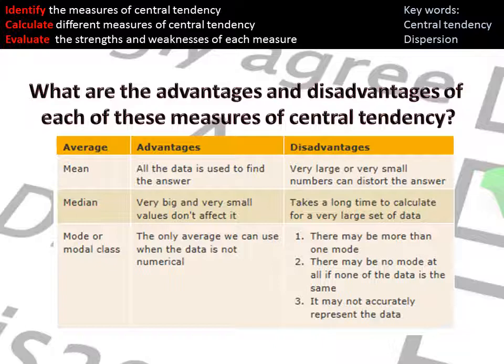It's also important that you understand the advantages and disadvantages of each of these measures, because you need to be able to say which one is more appropriate to use when. So, for example, the mean uses all the data, and that's a real advantage. However, the disadvantage is that one number, a very large or a very small number, can distort the answer. So if you've got a mean of the numbers 2, 2, 3, 4, 5, and then 30, that number 30 will greatly increase the mean, and therefore the mean is not an average of the data, because it's been affected by what we call an outlier.